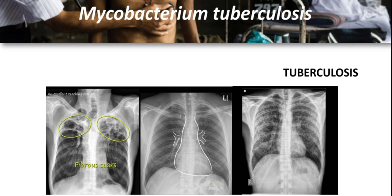A posterior-anterior radiograph of the chest is the standard view for detecting TB-related chest abnormalities. In some cases, especially in children, a lateral view may be helpful. In pulmonary TB disease, radiographic abnormalities are often seen in the apical and posterior segments of the upper lobe or in the superior segments of the lower lobe. However, lesions may appear anywhere in the lungs and may differ in size, shape, density, and cavitation, especially in HIV-infected and other immunosuppressed persons. Mixed nodular and fibrotic lesions may contain slowly multiplying tubercle bacilli with potential for progression to TB disease.